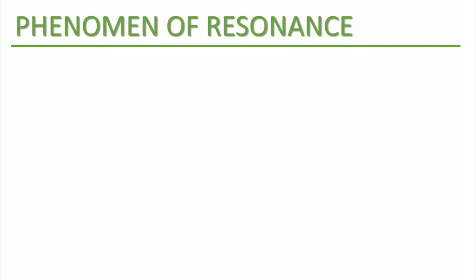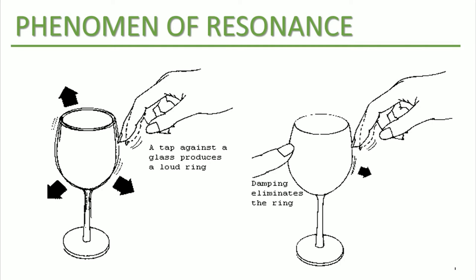Phenomenon of resonance. This phenomenon is a clear example of vibration. What we do in this experiment, basically, is we tap against the glass and this glass will produce a loud ring. If we put our finger on the opposite side of what we are tapping, we eliminate the damping in the ring.